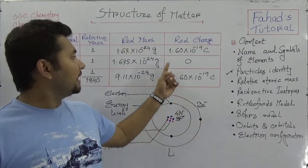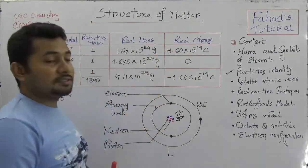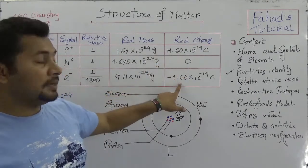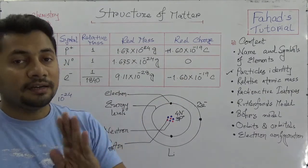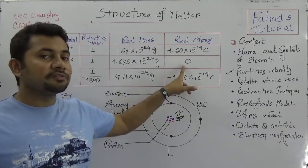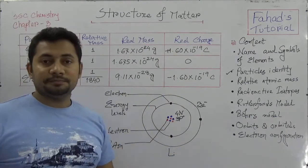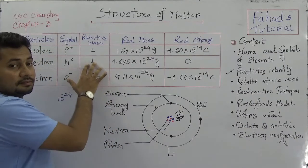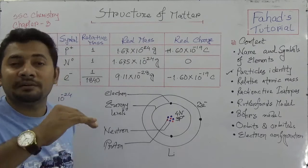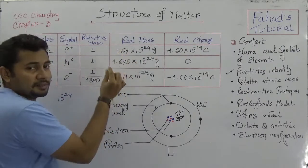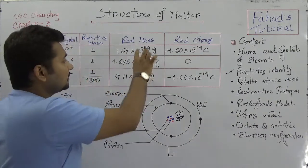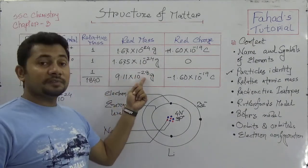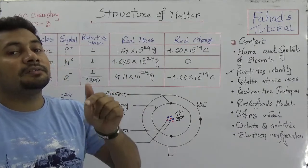So it is plus for the proton and minus for the electron — the charges are same but opposite in sign, written as +1 and −1 in relative terms. The charge of neutrons is 0, because it is neutral. We express the neutron as N⁰. The relative mass shows that the mass of proton and neutron are pretty much the same — 1.67 for proton and 1.675 for neutron. But the electron shows a dramatic difference, being much much lighter, at around 10⁻²⁸ grams.